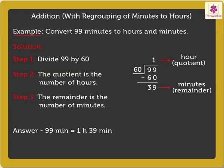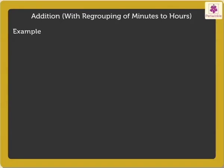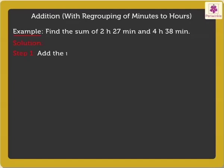Now, let's see how to do addition with regrouping of minutes to hours with the help of an example. Find the sum of 2 hours, 27 minutes and 4 hours, 38 minutes. Step 1: Add the minutes. Adding 27 plus 38, we get 65 minutes.